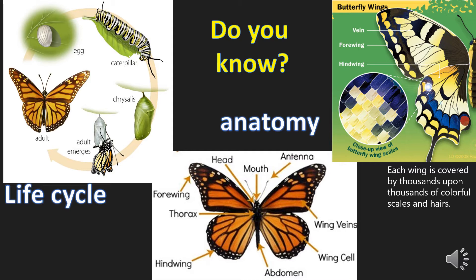I'm pretty sure at some point you have discussed the life cycle of the butterfly — from the egg, to the caterpillar, to the chrysalis. The adult emerges out of the chrysalis, and then there you have a beautiful butterfly.